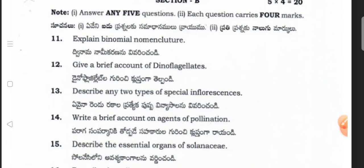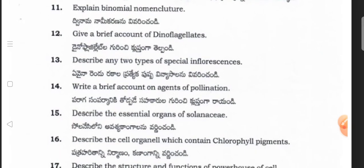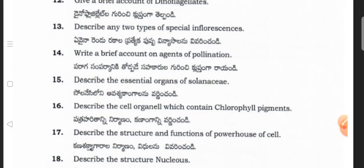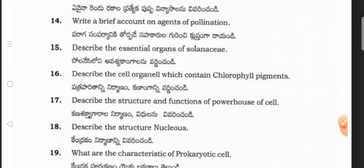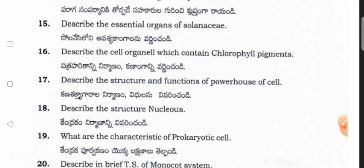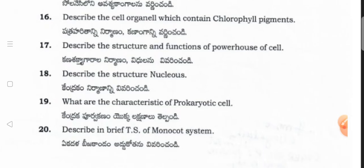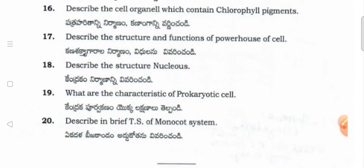Now the botany Section B questions: Explain binomial nomenclature. Give a brief account of dinoflagellates. Describe any two types of special inflorescence. Brief account of agents of pollination. Describe the essential organs of Solanaceae. Describe the cell organelle which contains chlorophyll pigments. Describe the structure and functions of the powerhouse of the cell (mitochondria). Describe the structure of the nucleus. What are the characteristics of the prokaryotic cell? Describe in brief the T.S. of the monocot stem.